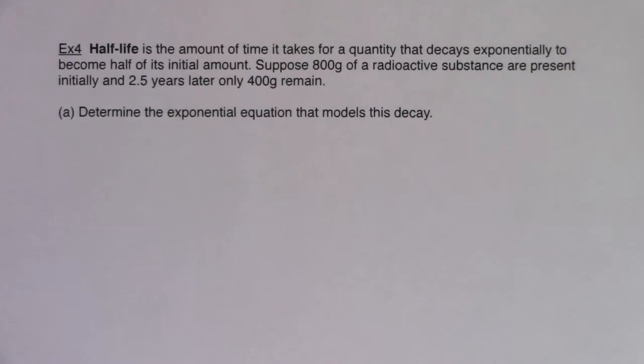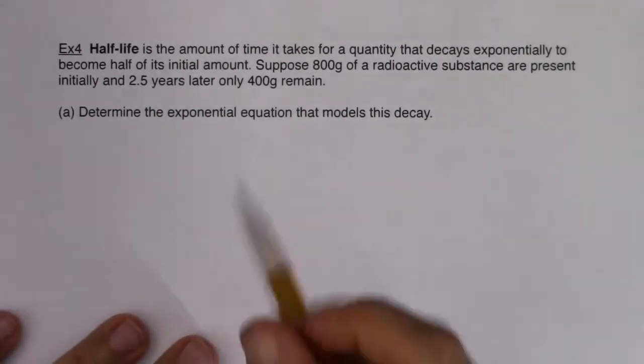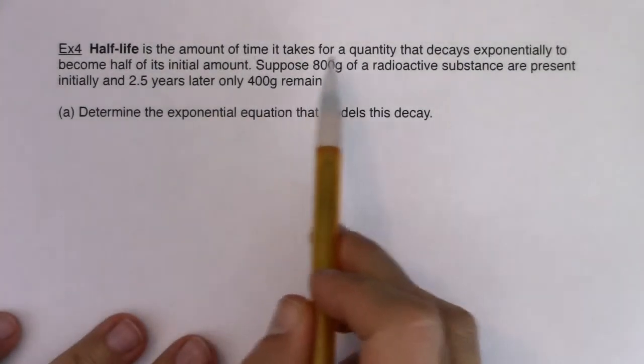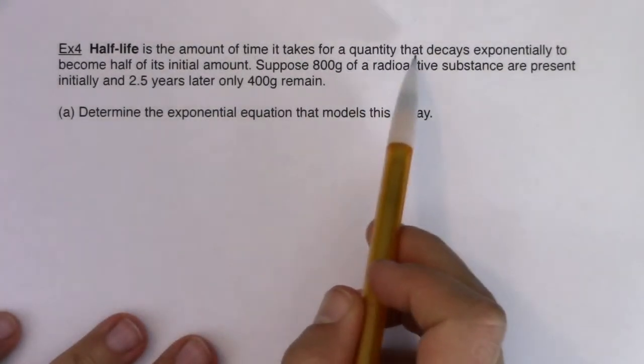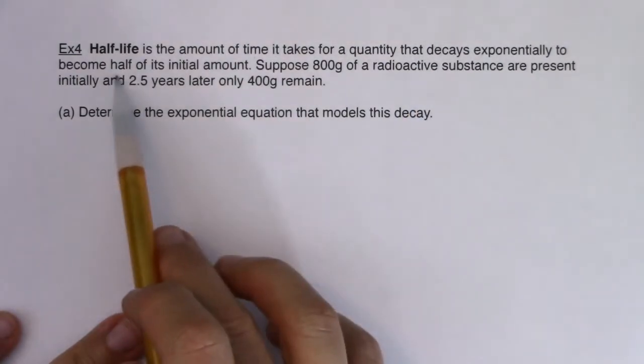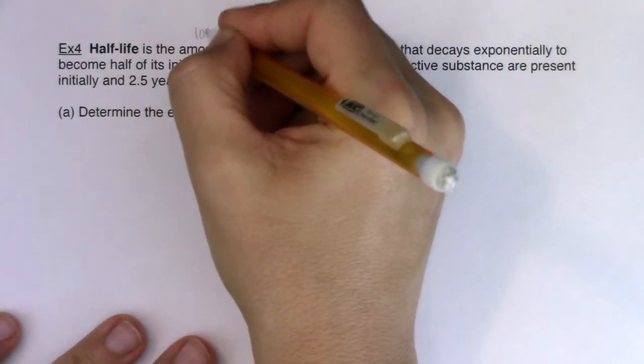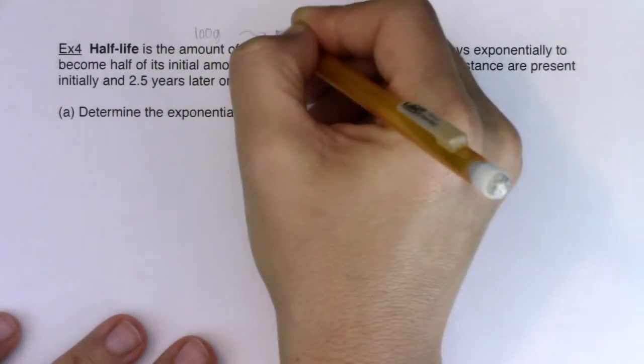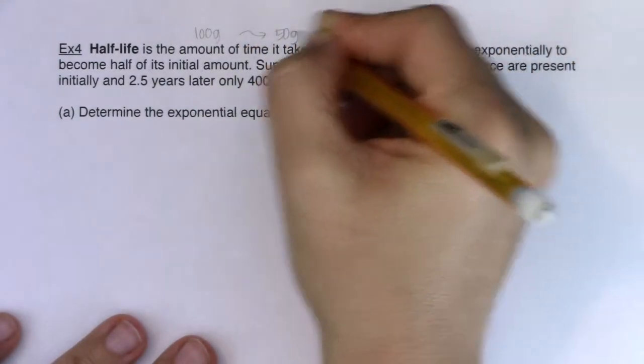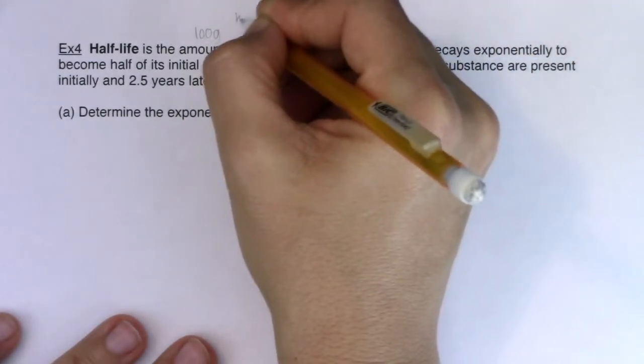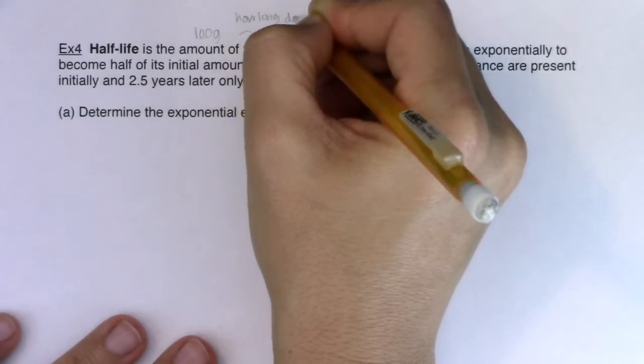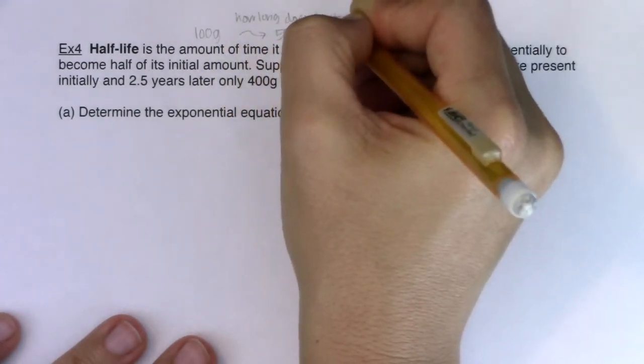Hey Math 31, welcome to example four. We're going to start talking about this idea of half-life, which pops up plenty in science. Half-life is the amount of time it takes for any quantity that decays exponentially to become half of its initial amount. So if you had some substance that initially had 100 grams, how long does it take to decay to half of what its original amount was? That's the half-life.